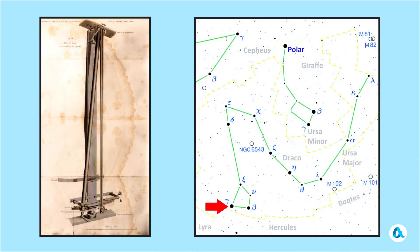For his observations Bradley chose the star gamma Draconis, because in the area where the observations were conducted it passes almost through the zenith and it's also bright. It can be observed through a telescope not only at night but also during the day.